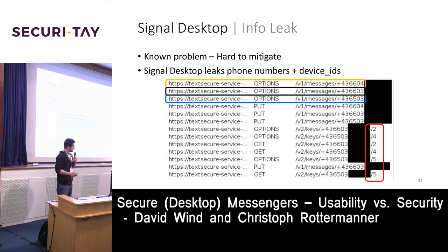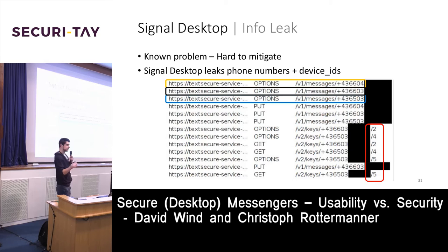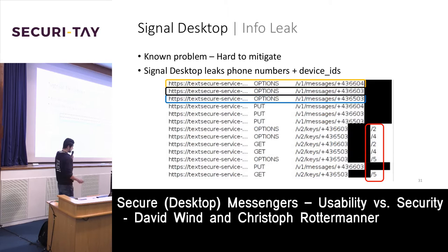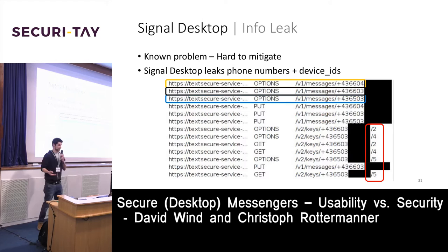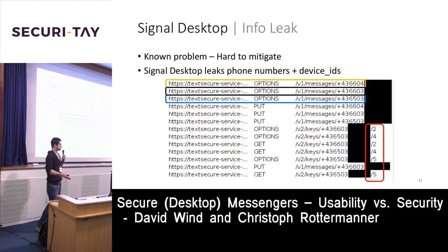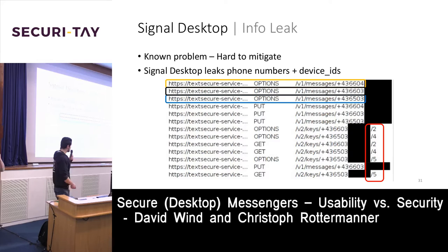Another problem: the phone number is included in the GET request. When Signal uploads contacts to the server, it uploads them in hashed format to prevent information leakage — but when sending messages, the phone number is included in the GET request, which may be stored in log files. Signal's server runs in the Amazon cloud, so Amazon may be able to enumerate all Signal users, phone numbers, and device IDs. They could simply use POST instead, which would not be included in log files.